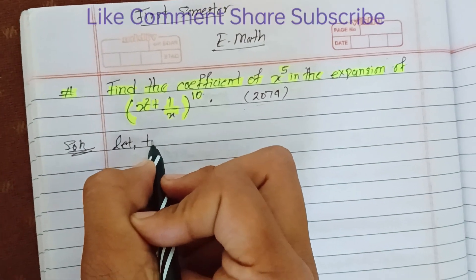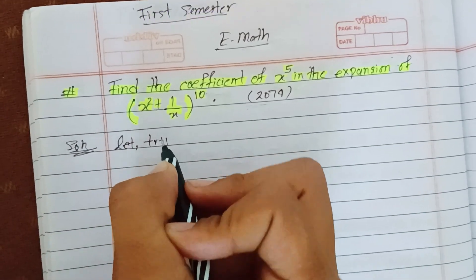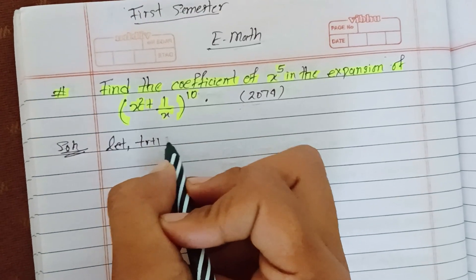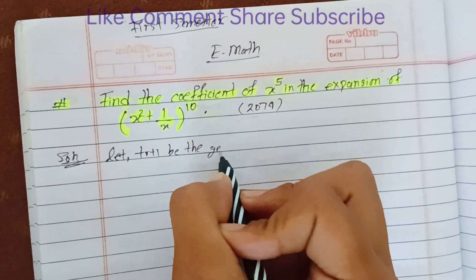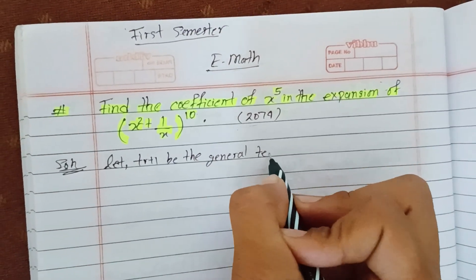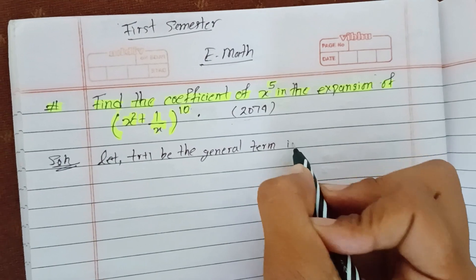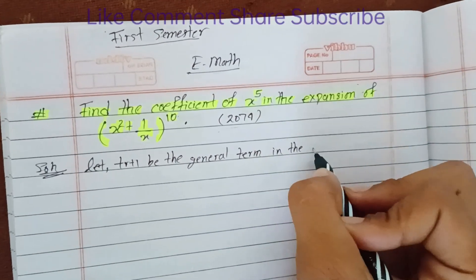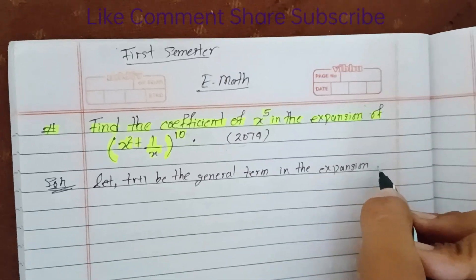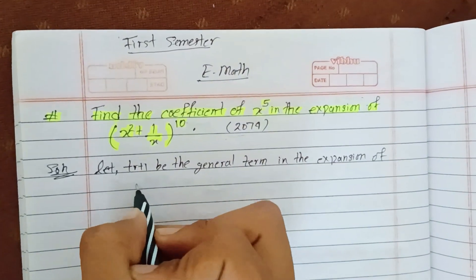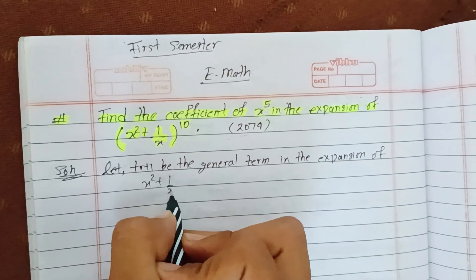Let T_(r+1) be the general term in the expansion of (x^2 + 1/x)^10.